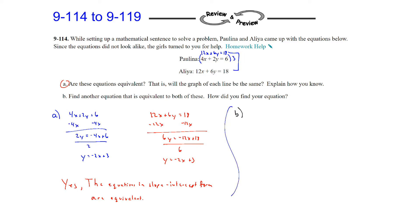Part B: Find another equation equivalent to both of these. We just saw that multiplying Paulina's equation by 3 gives the same equation. So if instead we multiply by 2, we get 8x plus 4y equals 12 — another equivalent equation. By multiplying every term by any number (positive, negative, or a fraction), you're not changing where the line is located; you'd get all sorts of different equations but they would represent the same line.